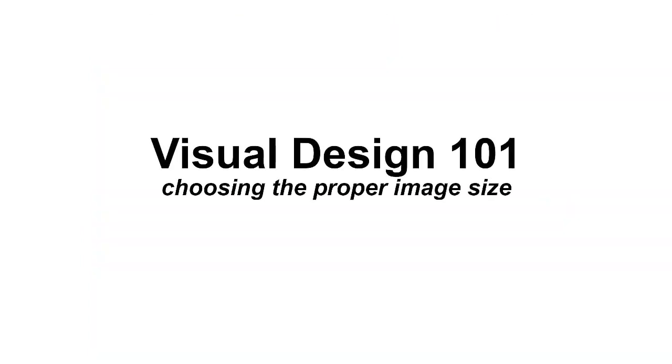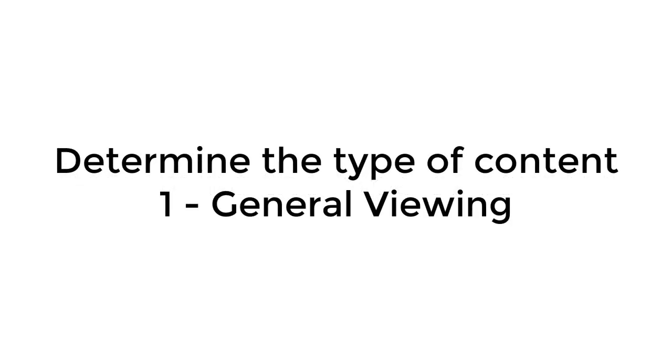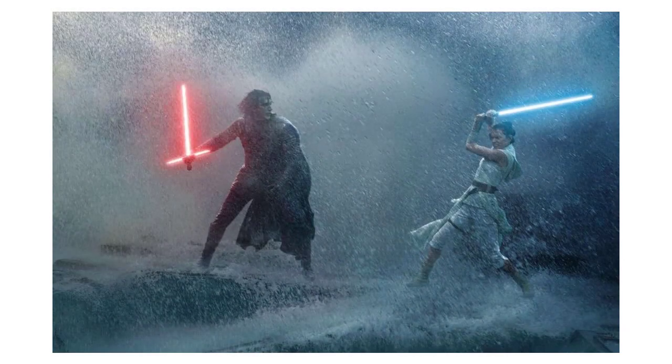So today we'll consider image size and exactly how it affects a project's successful outcome. The first order of business is to gather information on the type of content that will be displayed. Now you can break it down into three levels of detail. The first is when viewers will generally observe content where details are not critical. Video and movies are considered this type of content.